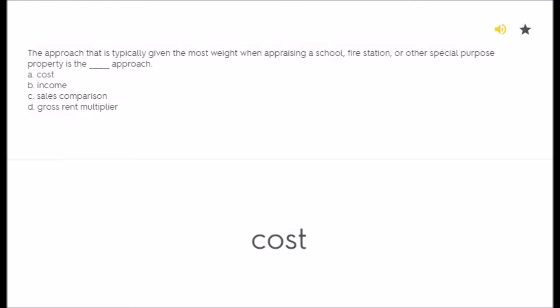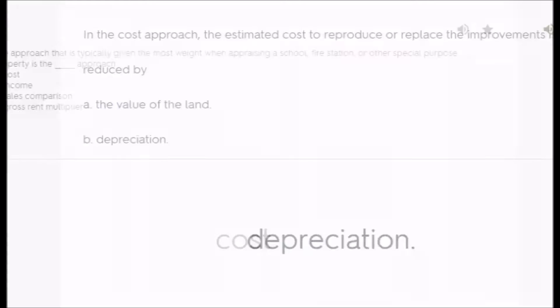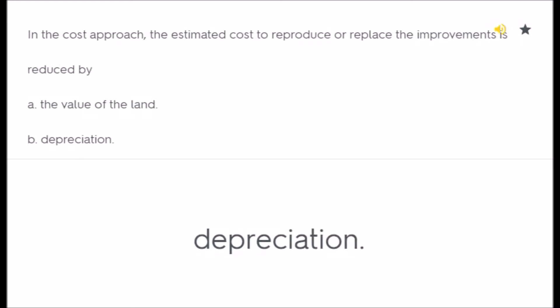The approach that is typically given the most weight when appraising a school, fire station, or other special purpose property is the blank approach: A) cost, B) income, C) sales comparison, D) gross rent multiplier. Answer: cost. In the cost approach, the estimated cost to reproduce or replace the improvements is reduced by: A) the value of the land, B) depreciation. Answer: depreciation.